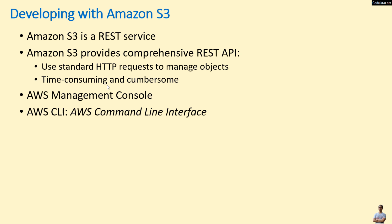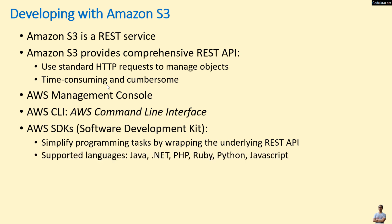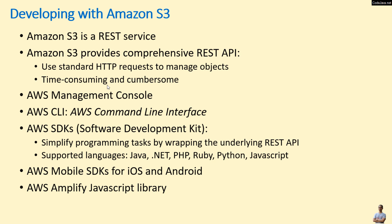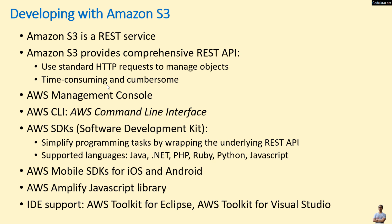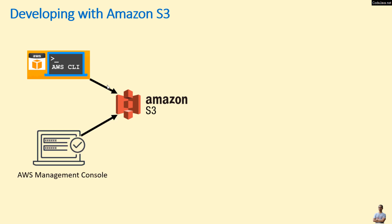For developing software with Amazon S3, you can use AWS SDK (Software Development Kits), which simplify programming tasks by wrapping the underlying REST API. The major supported programming languages are Java, .NET, and PHP. For mobile development you can use AWS Mobile SDK for iOS and Android. For JavaScript you can use the AWS Amplify JavaScript library. For IDE support there are AWS Toolkit for Eclipse and AWS Toolkit for Visual Studio. For managing objects stored in Amazon S3, you can use the AWS Command Line Interface or AWS Management Console.